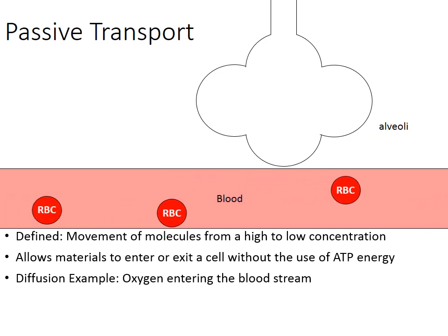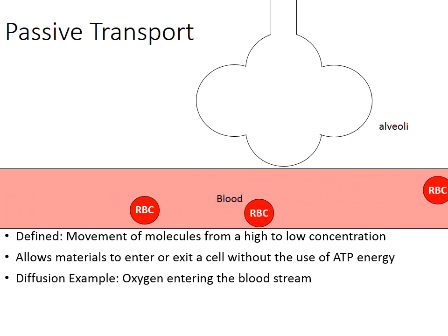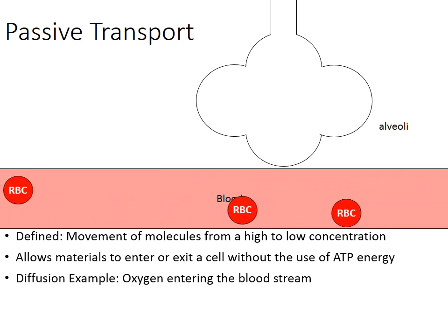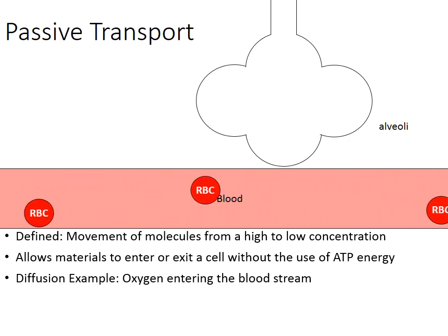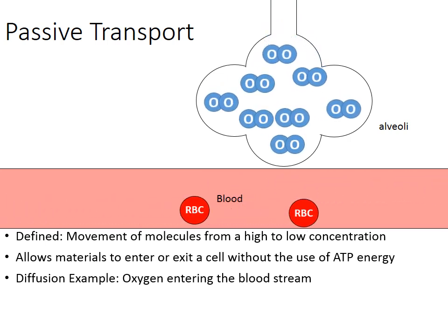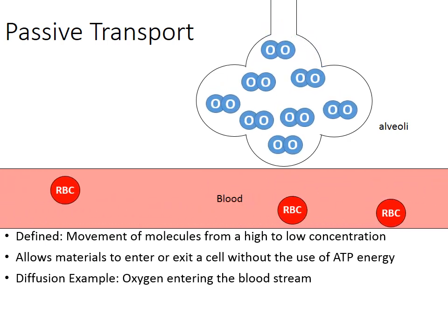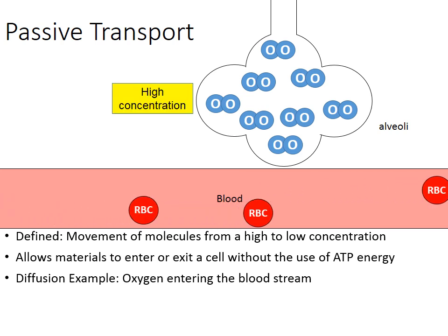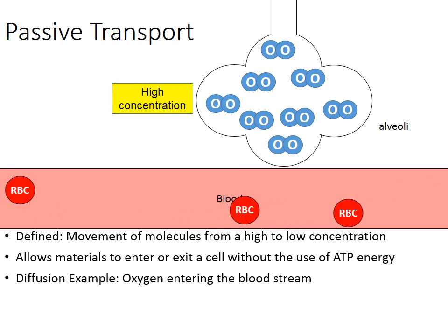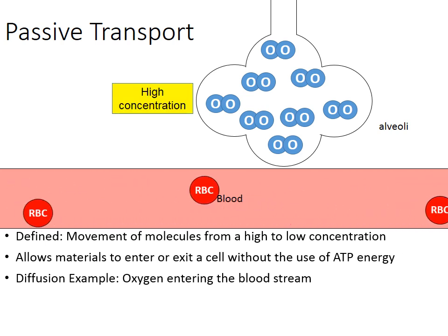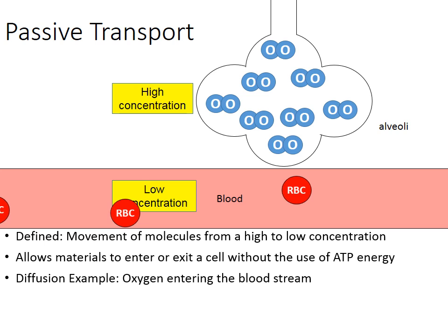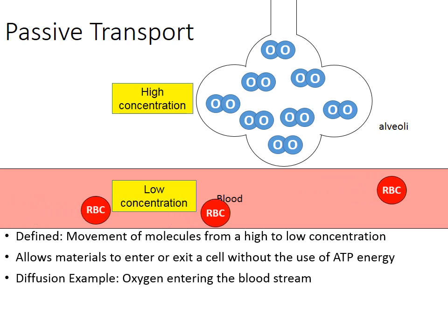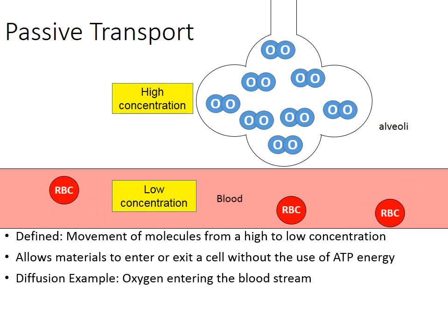In our lungs, we have thousands and thousands of these air sacs called alveoli. And every time we inhale, the air sacs fill up with O2 — they fill up with oxygen. And when that happens, there's a high concentration of oxygen in the alveoli and there's a low concentration of oxygen in the bloodstream.